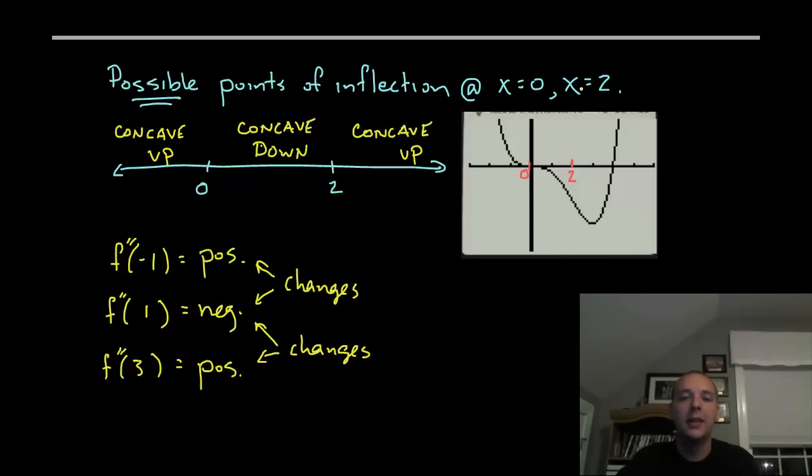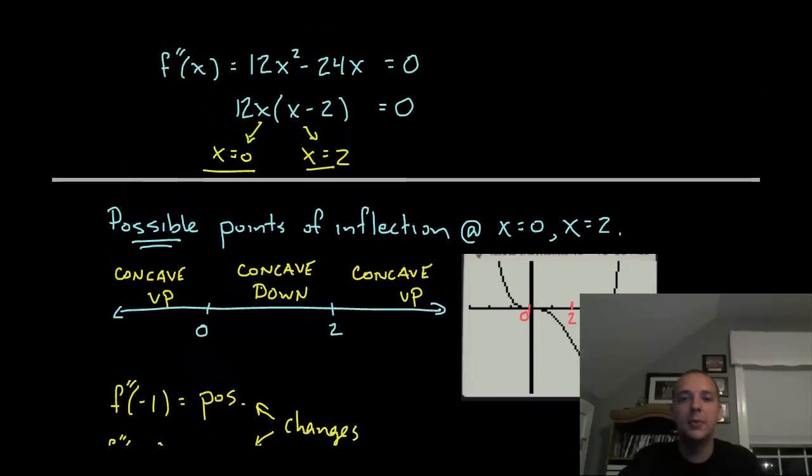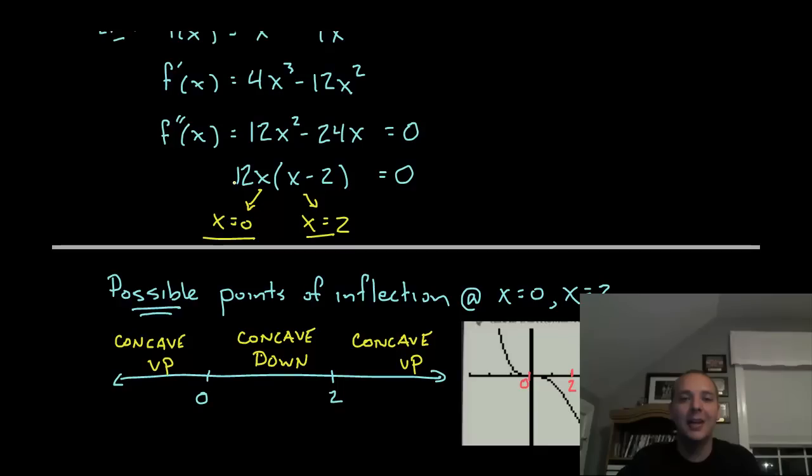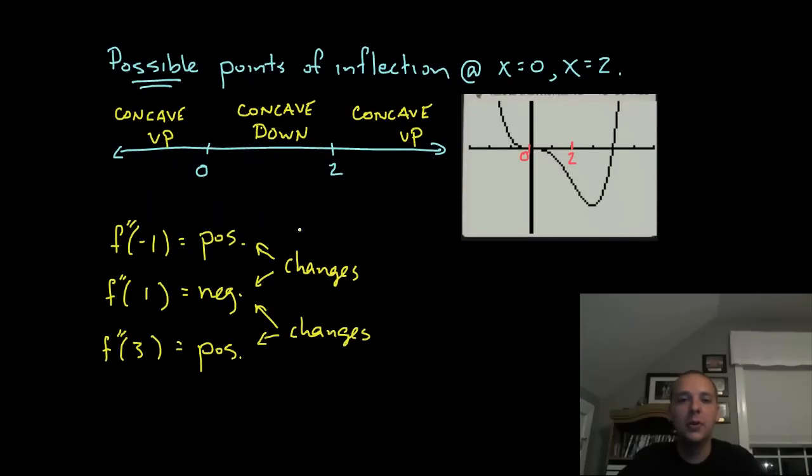We have to understand that that's not 100%. There are examples, not in this video, but there are examples out there where you can get a second derivative being zero at a number and it not be a point of inflection. It does happen. So we are going to put zero and two on a number line and just because it's not really the point of this video I went ahead and sped through the algebra in regards to finding concavity.